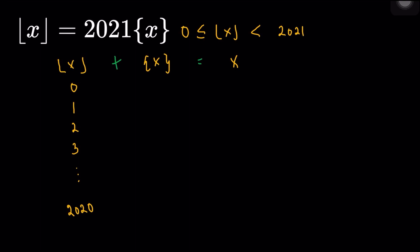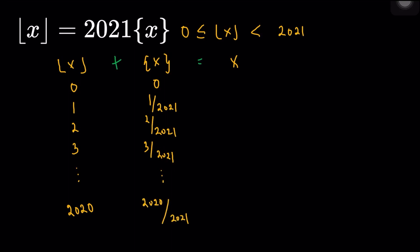If floor(x) is 0, substituting into the original equation gives fractional part of x equal to 0. If floor(x) is 1, the fractional part of x is 1 over 2021. If floor(x) is 2, it's 2 over 2021 for the fractional part. You can see there's a nice pattern, all the way until the last one: 2020 divided by 2021 for the fractional part of x.